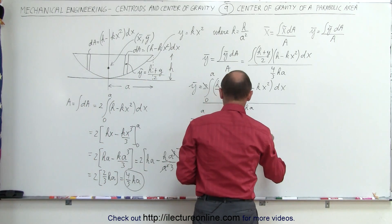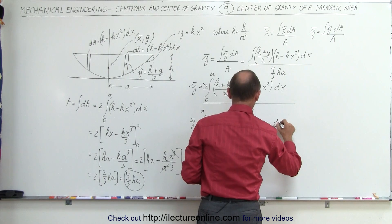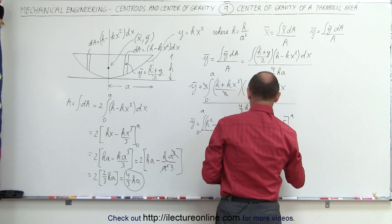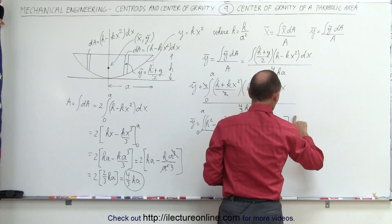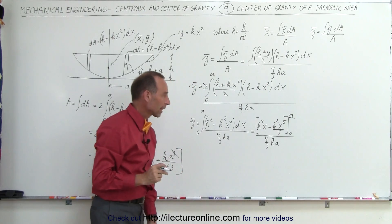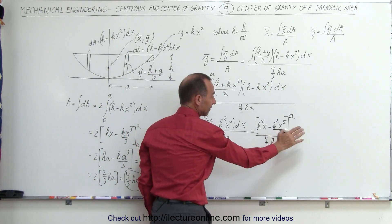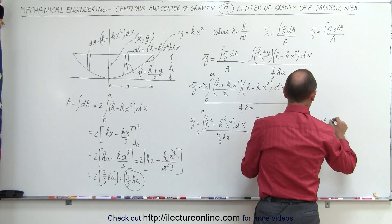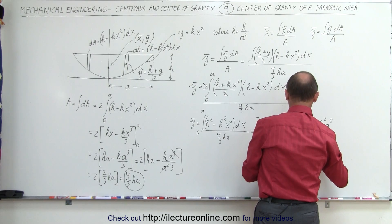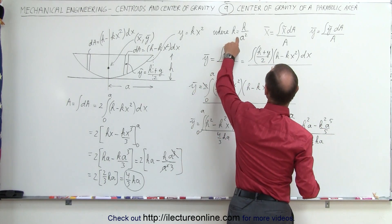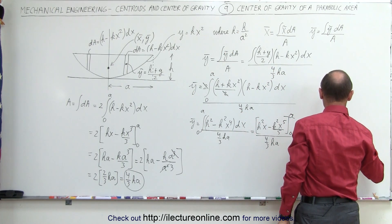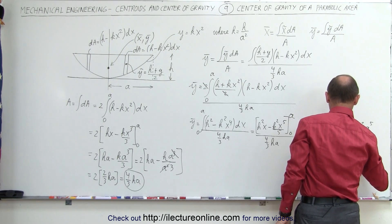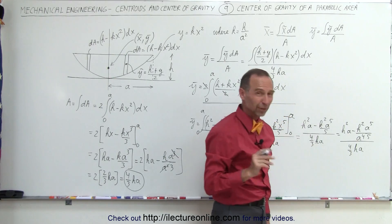We're now ready to integrate. This gives h²x - k²x⁵/5, evaluated from 0 to a, all divided by (4/3)hA. Plugging in the lower limit gives 0. So this becomes h²a - k²a⁵/5, divided by (4/3)hA. Now substituting k = h/a², we get h²a - (h²/a⁴)(a⁵/5), divided by (4/3)hA.